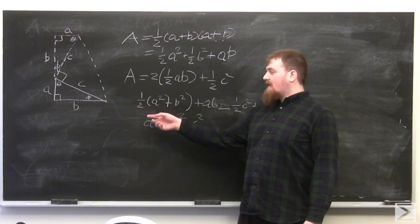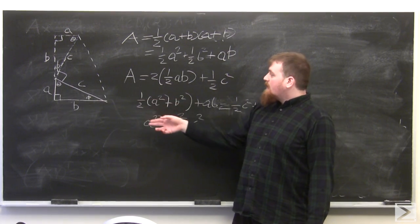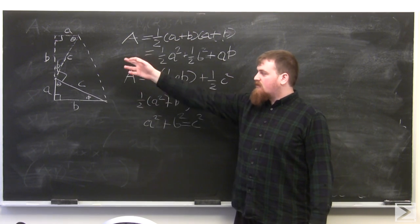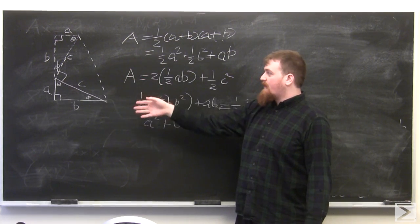Start with a right triangle with side lengths A and B and hypotenuse C. Construct another congruent right triangle such that its B side is collinear to the first one's A side, then draw the trapezoid which is their convex hull.